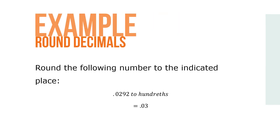Let's take a look at rounding by way of an example. Round the following number to the indicated place: 0.0292 to hundredths would equal 0.03.